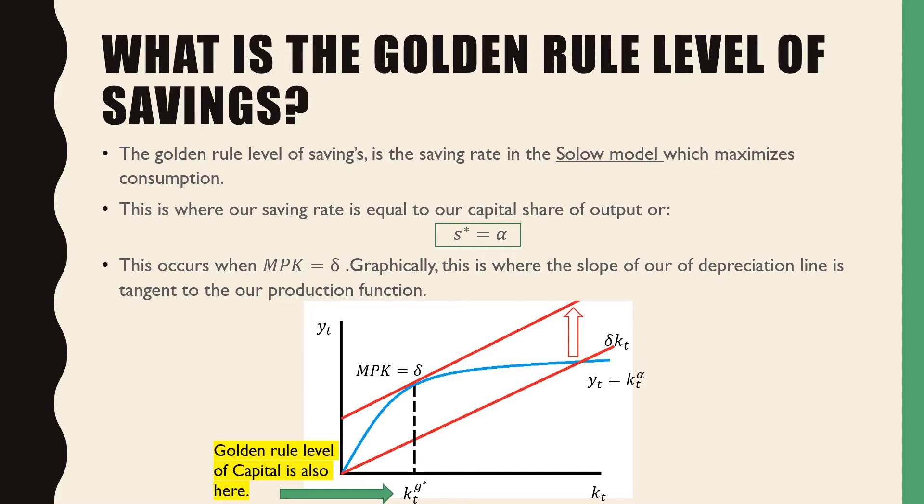This occurs where our marginal product of capital is equal to delta, which is our depreciation rate. Graphically, this is where the slope of our depreciation line is tangent to our production function.